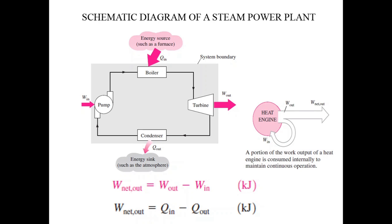Looking at the schematic diagram of a power plant: in the boiler, heat Q_in is added. The water absorbs the heat, evaporates, and becomes steam. The high-velocity steam enters the turbine and rotates it, producing mechanical work output. After producing work, the steam at low pressure goes to the condenser — a heat rejection device — where all the heat energy in the steam is rejected and the steam becomes liquid, completing a phase change. The water is then pumped back to the boiler, making the process cyclic.